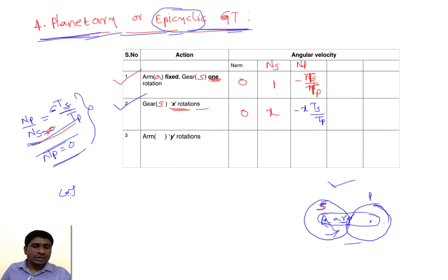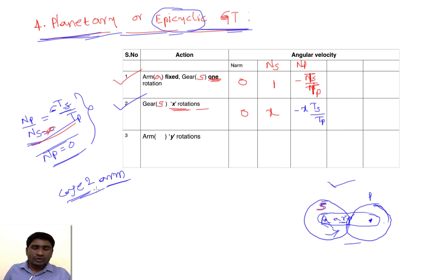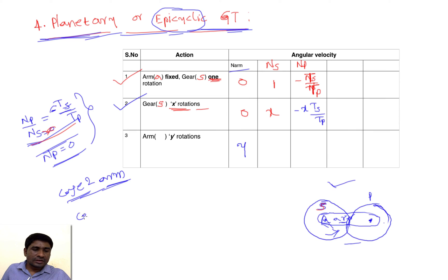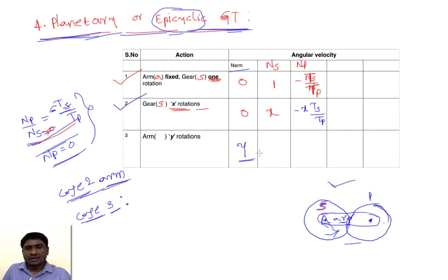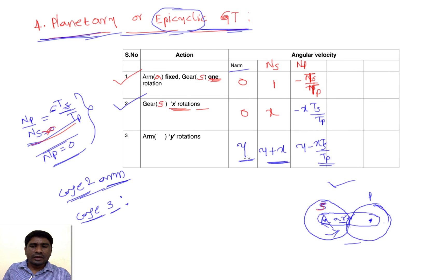Case 2 is when the arm is also rotating — it is making extra rotation. The arm is making y revolutions. To get Case 3, we add Case 1 and Case 2 together, adding y to all previous values. So: nR equals y, nS equals y plus x, and nP equals y minus x times tS/tP. In our previous setup we chose nS equals zero and y equals one.